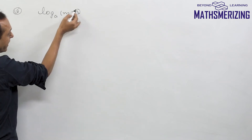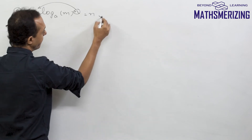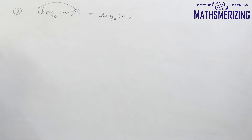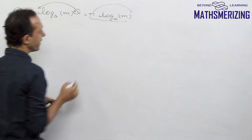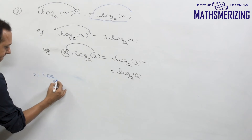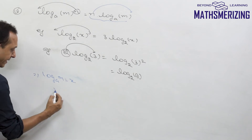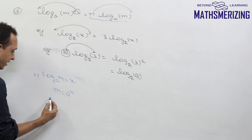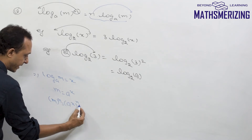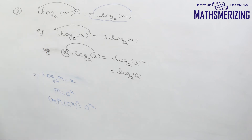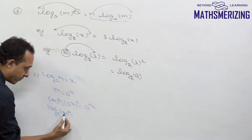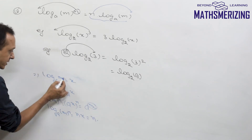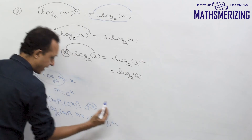For property 5, where we have m raised to the power n, the property says we can bring n out front: log_a(m^n) equals n times log_a(m). To prove this, let log_a(m) equal x, so m equals a to the power x. Then m to the power n equals a to the power x to the power n, which is a to the power (n·x). Taking the log, the power of a equal to m^n is n·x, and since x is log_a(m), we get n times log_a(m).